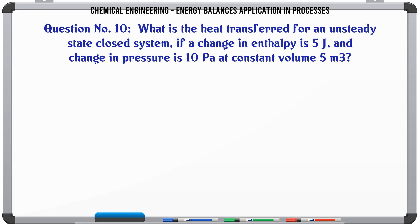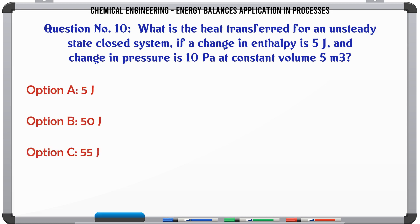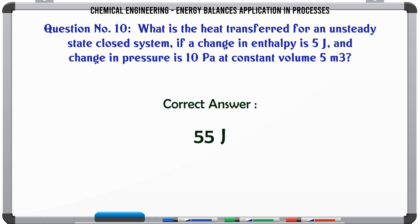What is the heat transferred for an unsteady state closed system if change in enthalpy is 5 J and change in pressure is 10 Pa at constant volume 5 m³? A: 5 J. B: 50 J. C: 55 J. D: 85 J. The correct answer is 55 J.